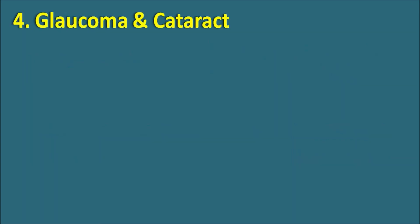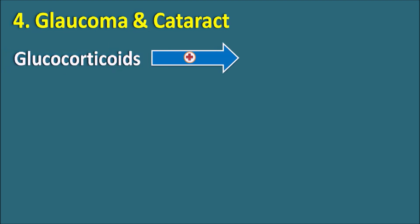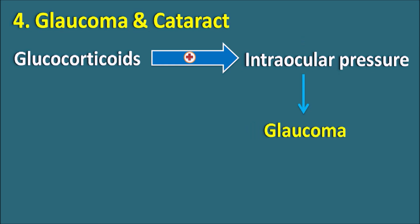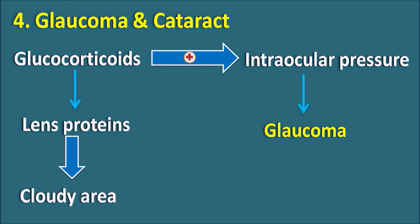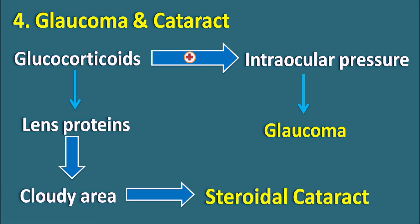The fourth side effect is glaucoma and cataract, indicated by GC. Both effects are related to the eye. Glucocorticoids can increase intraocular pressure, raising the risk of glaucoma. These drugs can also interact with lens proteins, and when lens proteins covalently bind with glucocorticoids, it causes destabilization resulting in a cloudy area behind the lens — producing steroid-induced cataracts.